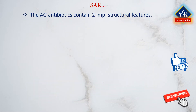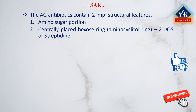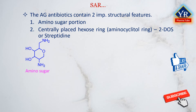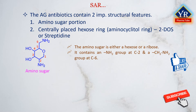The aminoglycoside antibiotics contain two important structural features: the amino sugar portion and the centrally placed hexose ring, which is either 2-deoxystreptamine or streptidine. An amino sugar is either a hexose or a ribose in which the oxygen atom forms the ring system. The amino sugar in aminoglycosides contains an amino group at C2 and a methylamine group at C6.